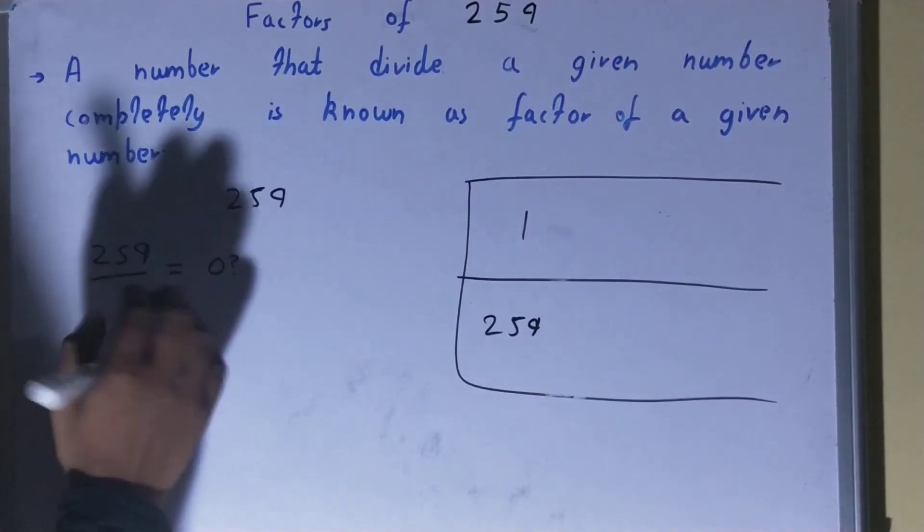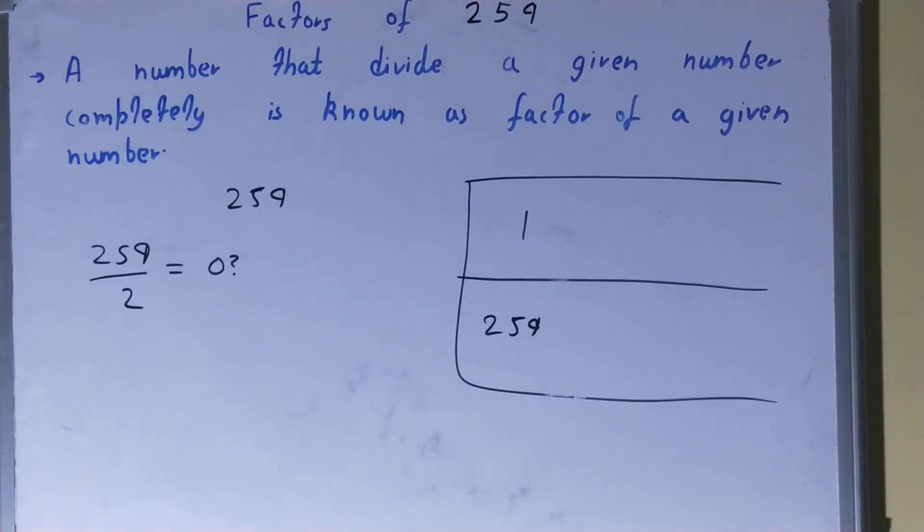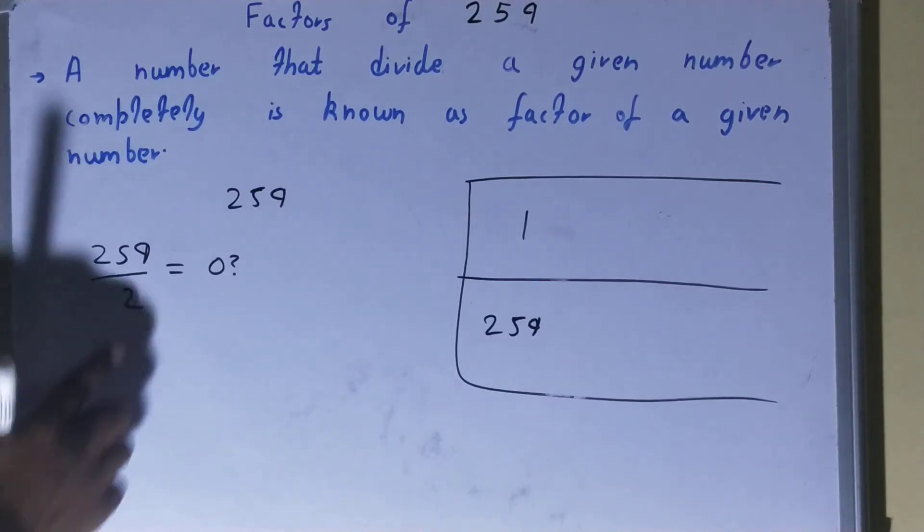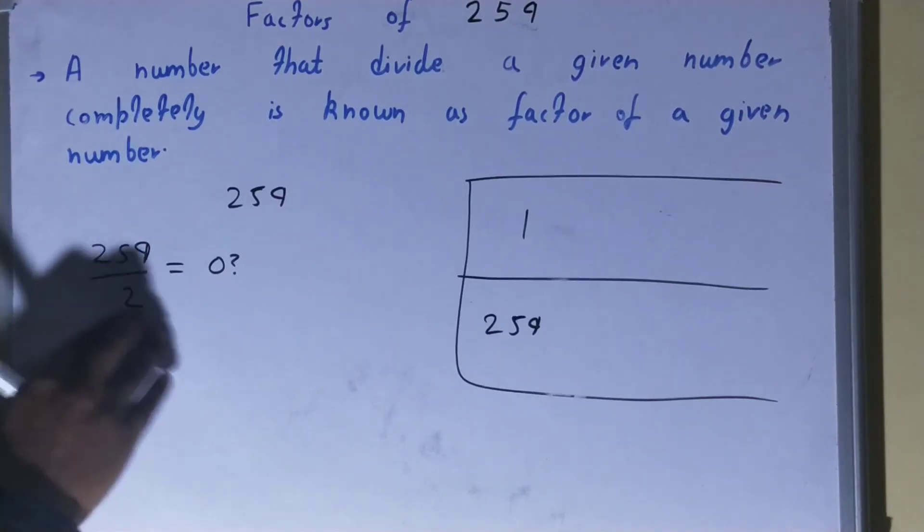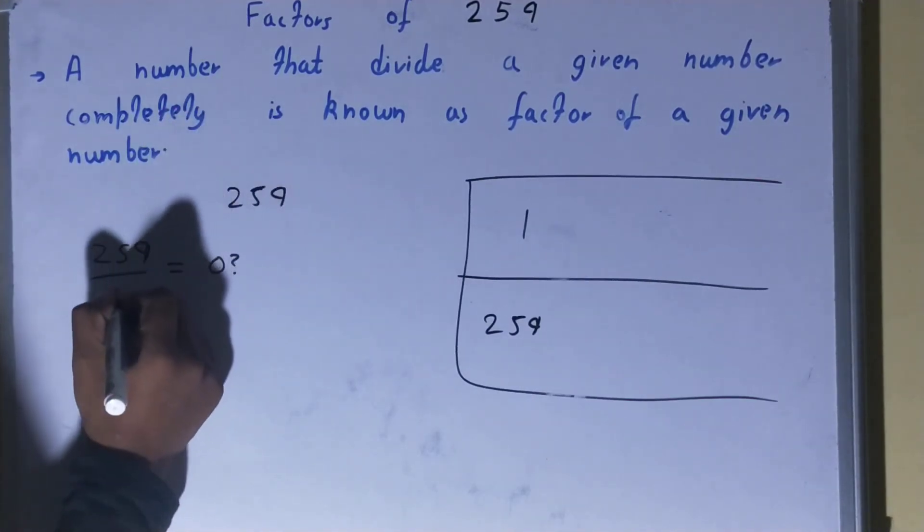Automatically after 1, we'll check with 2. Now one thing you need to see very carefully: whenever you have an odd number in the numerator, just ignore checking with even numbers in the denominator. Don't check with 2, 4, 6, and so on. Just ignore even numbers. So we'll check with 3.